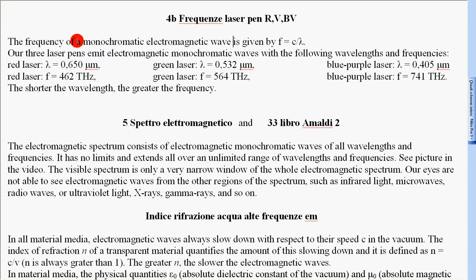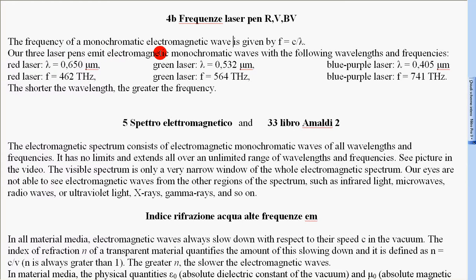The frequency of a monochromatic electromagnetic wave is given by F equal to C on λ. Our three laser pens emit electromagnetic monochromatic waves with the following wavelengths and frequencies. Red laser: